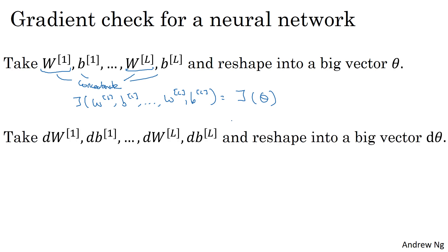Next, with W and B ordered the same way, you can also take DW1, DB1, and so on, and reshape them into big giant vector D theta of the same dimension as theta.